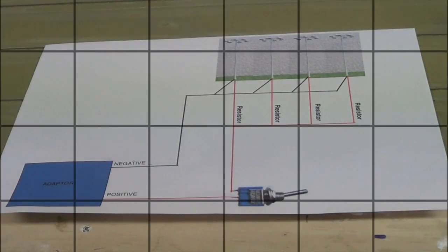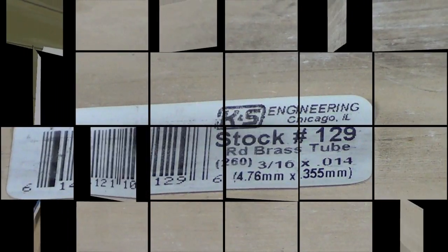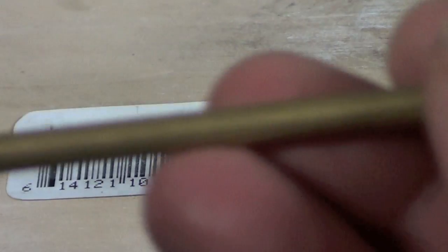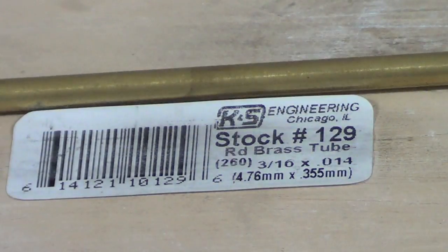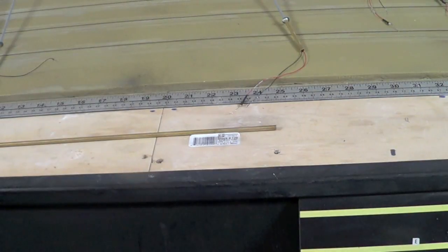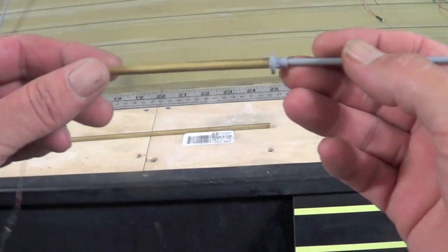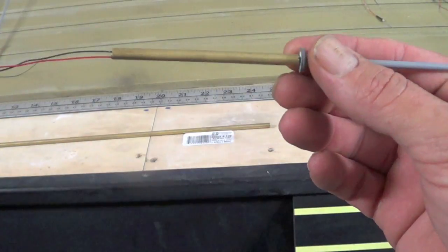Okay guys, back with the tower lights or the yard lights. Now I'm using brass tubing to hold the lights onto the baseboard and the plaster. This brass rod or tube is 3/16 by 0.014.